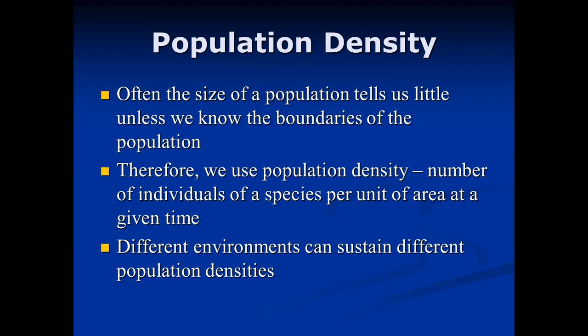Usually when we talk about population density, particularly for humans, we use people per square mile or people per square kilometer. The greater the population density, the more clustering of people in that area. Different biomes support different population densities: the greatest biodiversity and generally higher population densities are found near the equator, while polar areas have low population density, dependent on climate and available resources.